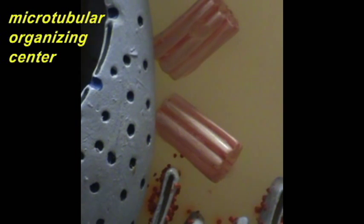The centrioles are also the location which organizes and produces the microtubules of the cell. So the centrioles are sometimes referred to together, or sometimes referred to as the microtubular organizing center.